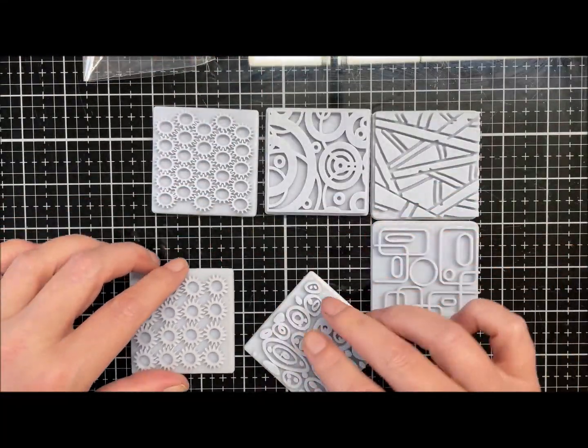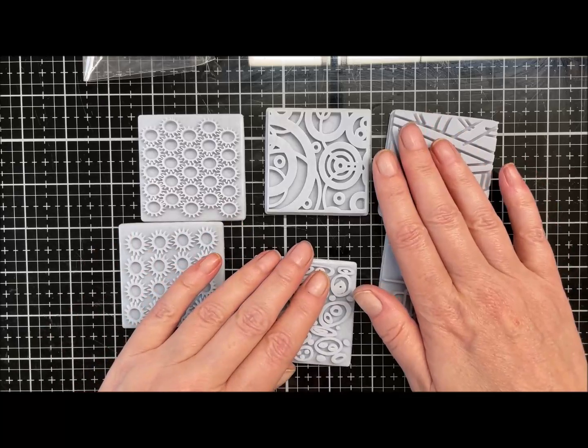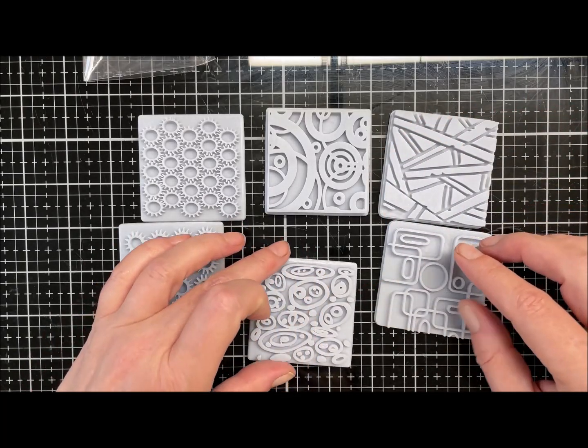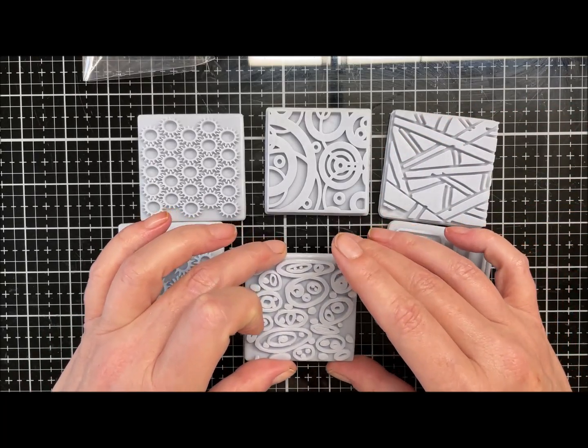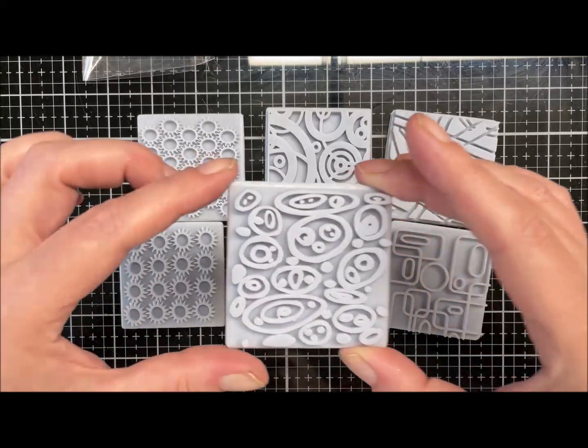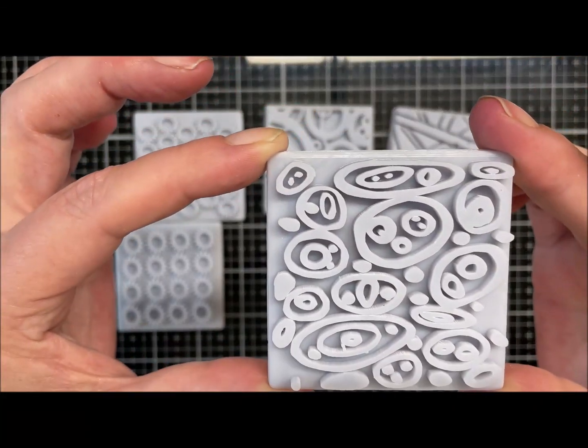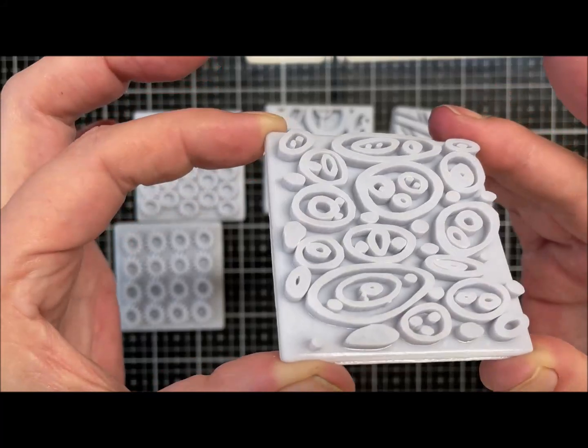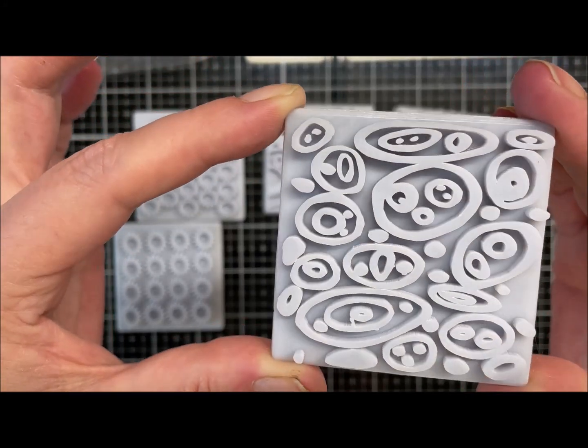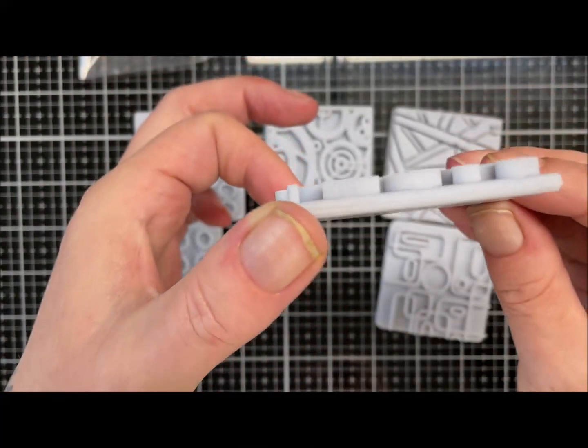There's one where the cogs are more spaced out. Then we have got, let me see, I just want to make sure I get the names right. This is the doodle circle texture plate, just nice little doodles on there. You can see the depth on that, so another fabulous texture plate.